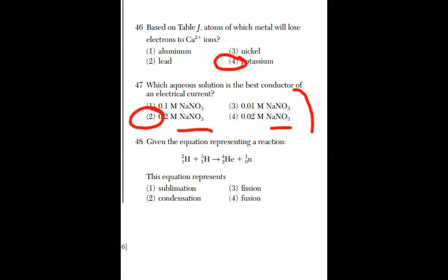For 48, given the equation, which type of equation is this? Well, when you see mass numbers and atomic numbers, you have a nuclear equation. Nuclear equations include decay. That's beta and alpha decay. Fission and fusion. And then transmutation. So it's not a phase change. So it's either fission or fusion. And I have light nuclei that are making a heavy nuclei. And that is fusion.